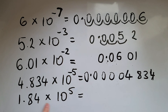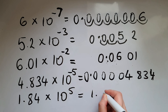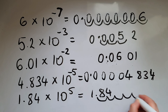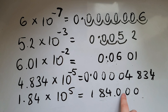Now, 1.84 times 10 to the power of 5 — it's a positive power, which means we're going to move the decimal point to the right in the positive direction, making the number much larger. So 1.84 times 10 to the power of 5 means we move the decimal point five places to the right: 1, 2, 3, 4, 5. Filling this in with zeros and moving the decimal point, our answer is 184,000.